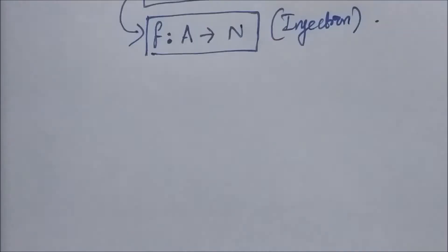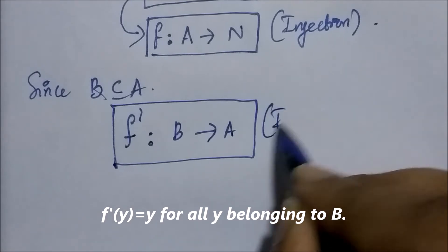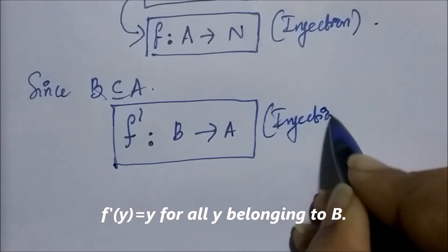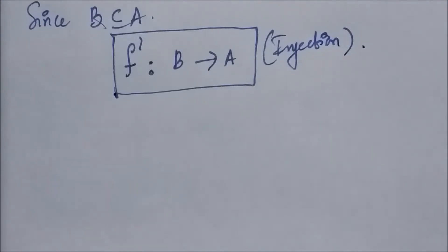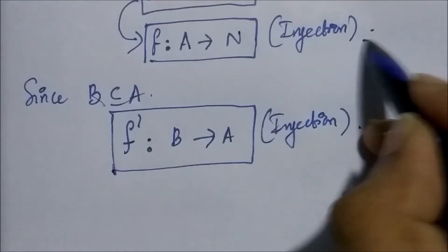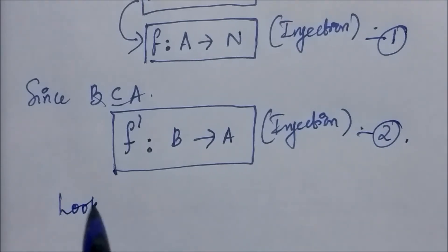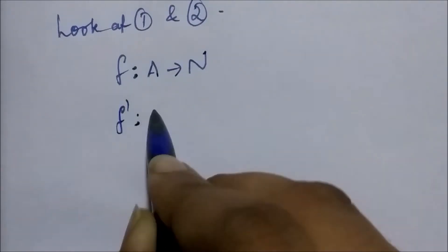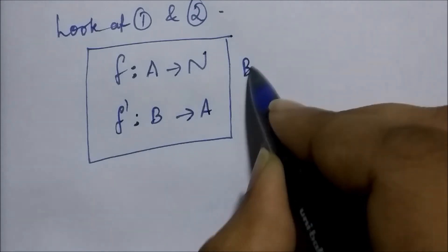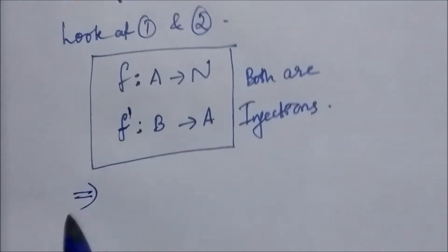Now since B is a subset of A, there exists an injection function f' from set B to set A, where each element belonging to B is mapped to itself — because every element of B also belongs to A since B is a subset of A. So that's an injection function. Looking at these two functions: f from A to ℕ and f' from B to A are both injections.